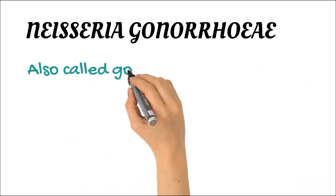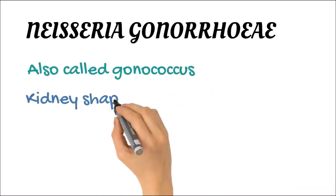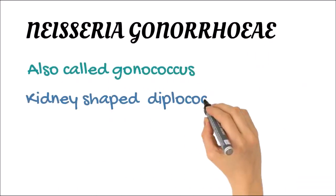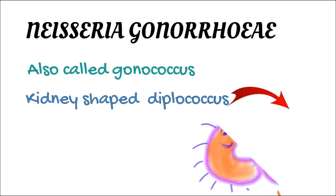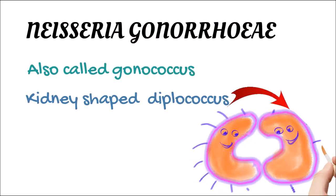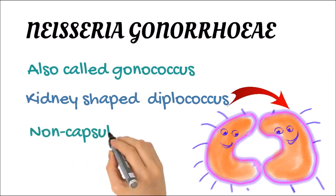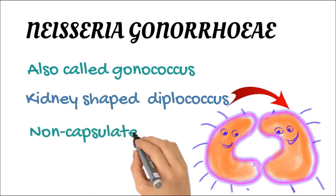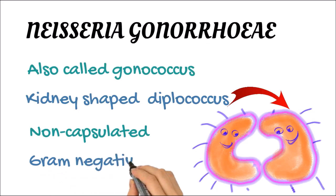Neisseria gonorrhoeae is also called gonococcus. It is a kidney-shaped diplococcus, which means it exists in pairs. It is non-capsulated, gram-negative bacteria, which means it doesn't take up gram stain at all.